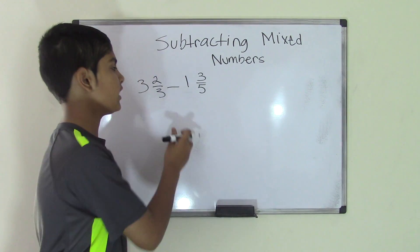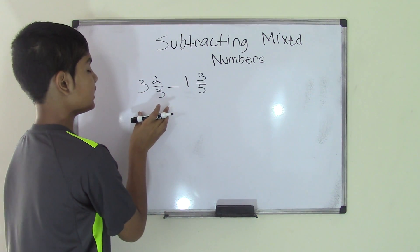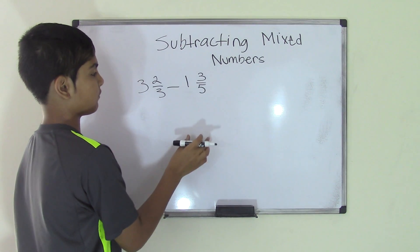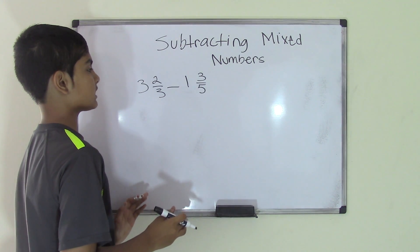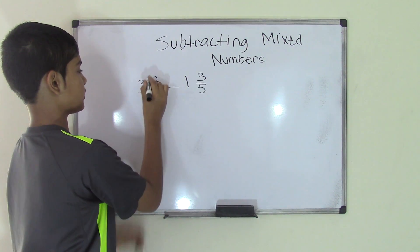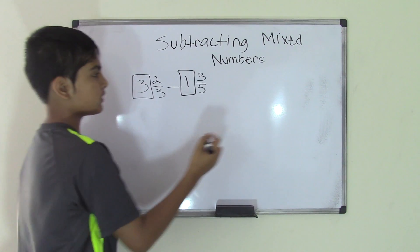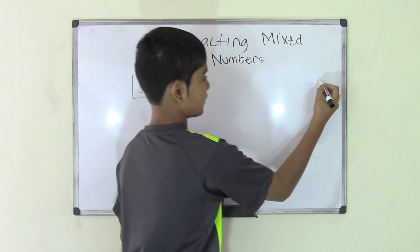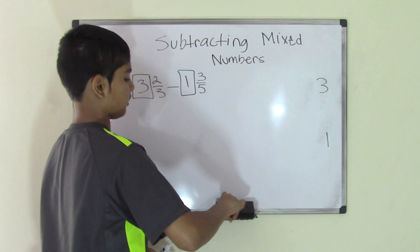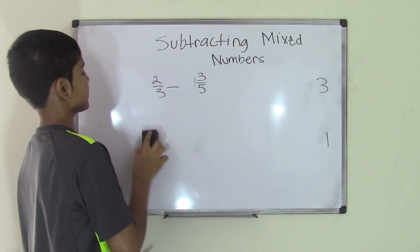So over here on the board I have two mixed numbers which are 2 and 2/3 and 1 and 3/5. Now to do this, first remember we will have to put the whole numbers — which are 3 and 1 — aside. So let's put the whole numbers over here: 3 and 1. Now we can set aside the whole numbers and just go ahead and do the fractions.